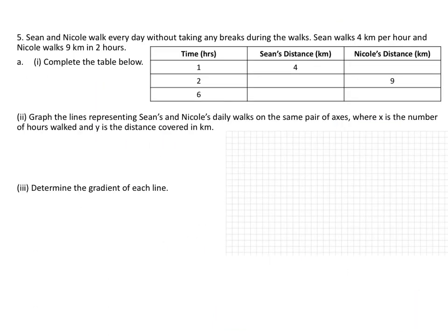Here's an application problem. Sean and Nicole walk every day without taking any breaks during their walk. Sean walks at 4 kilometers per hour, and Nicole walks 9 kilometers every 2 hours. First, we want to complete the table with their distance over a given number of hours, and then graph the lines that represent Sean and Nicole's walks on the same pair of axes, and then determine the gradient of each line. Go ahead and pause the video and answer question A.